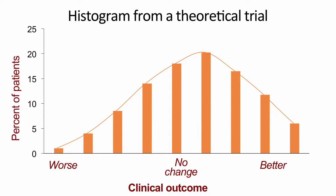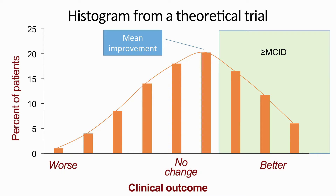Here are data from a theoretical trial showing PRO improvement. On average, there was a mean improvement, but you can see that the mean improvement was a little bit less than the Minimum Clinically Important Difference. However, we still see that about a third of patients improved by more than the MCID.